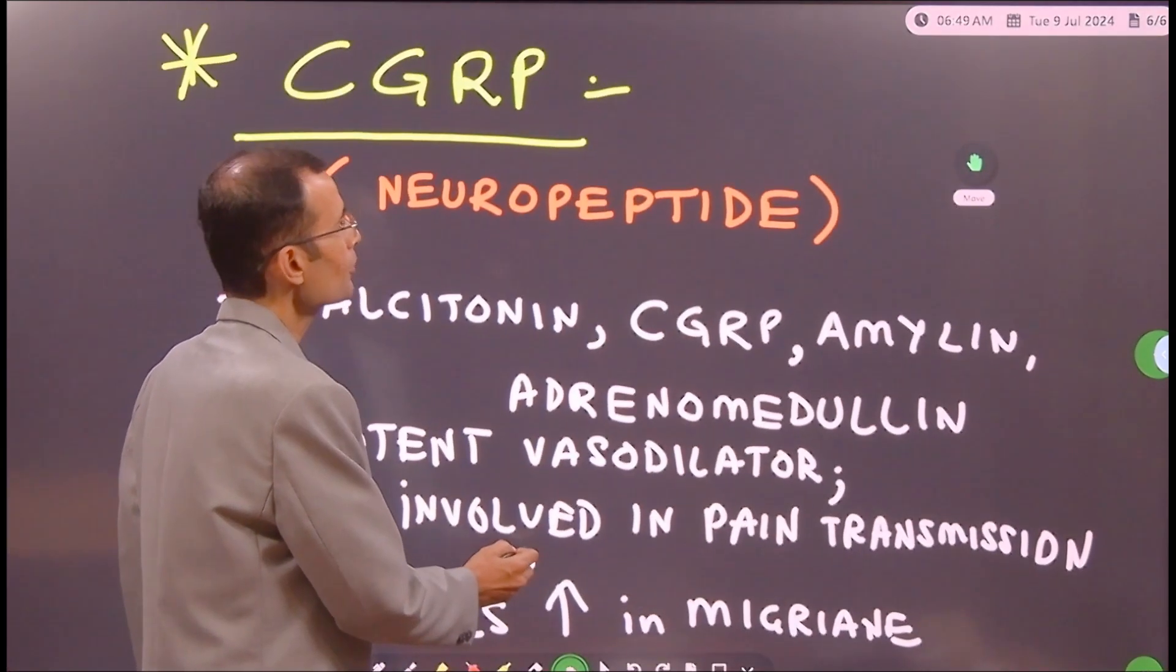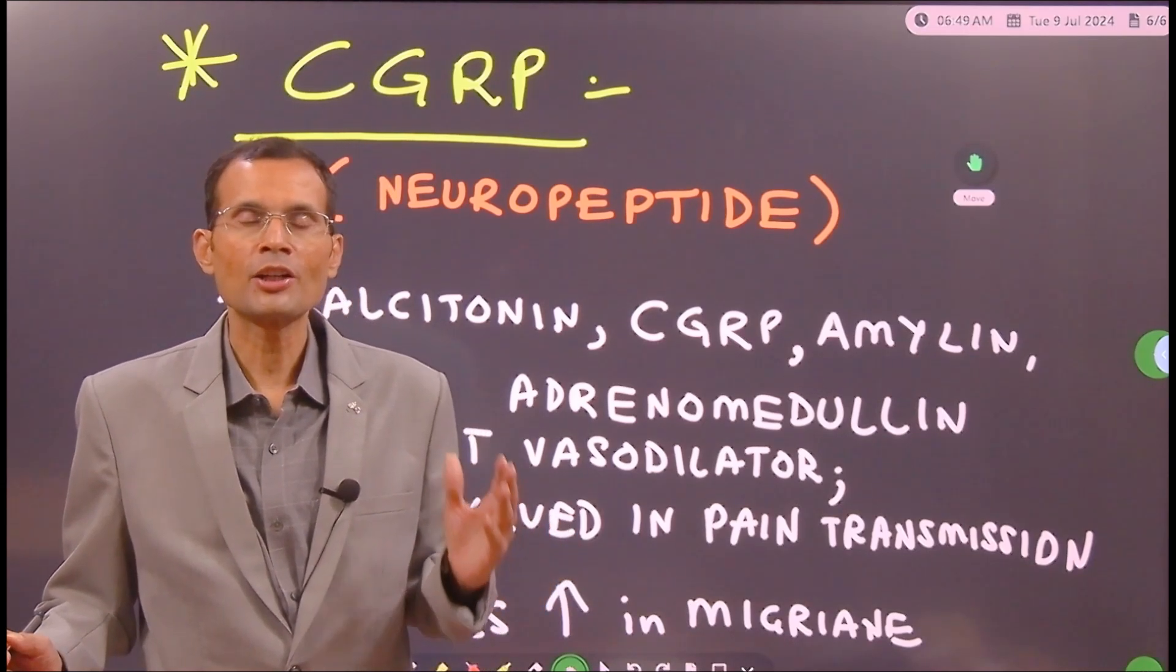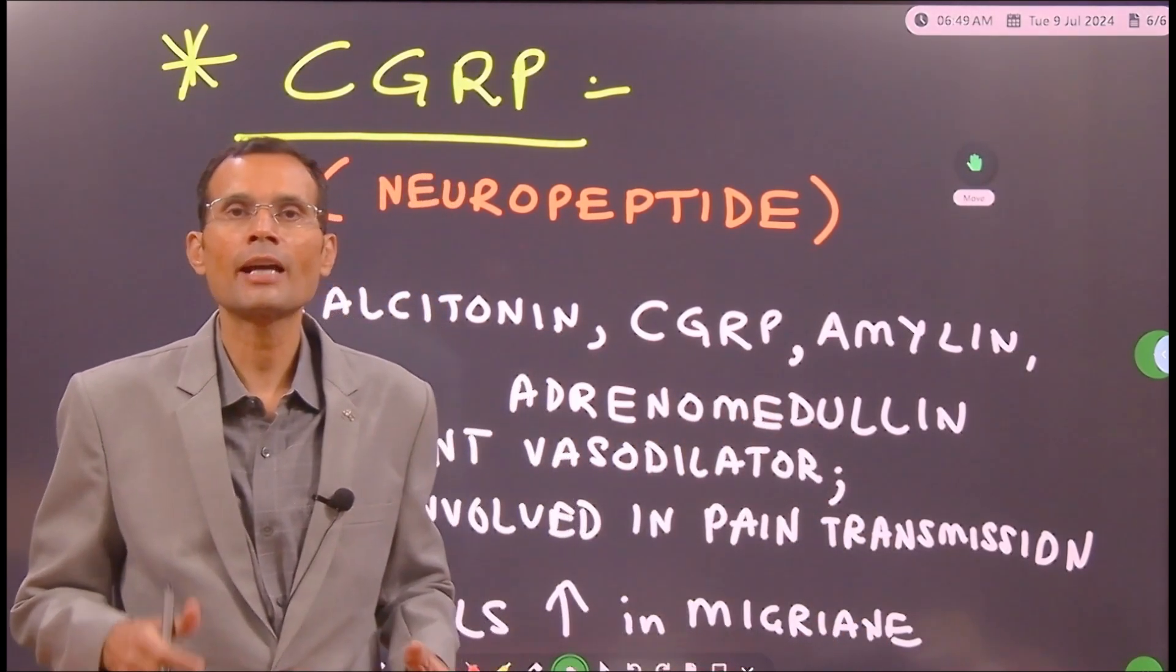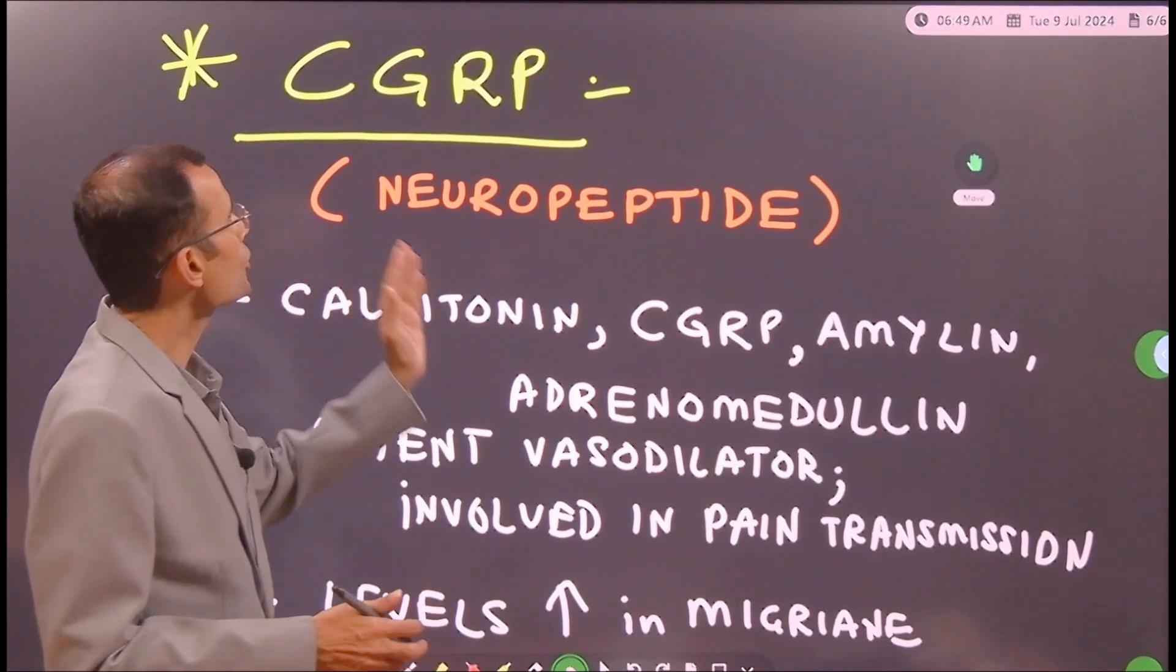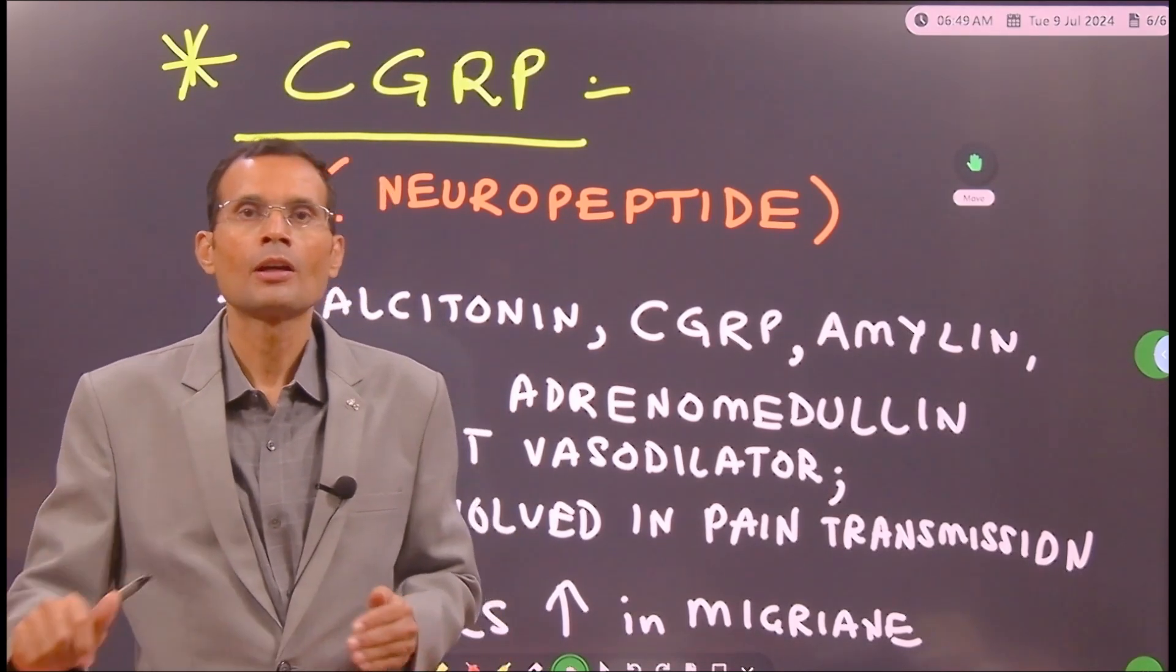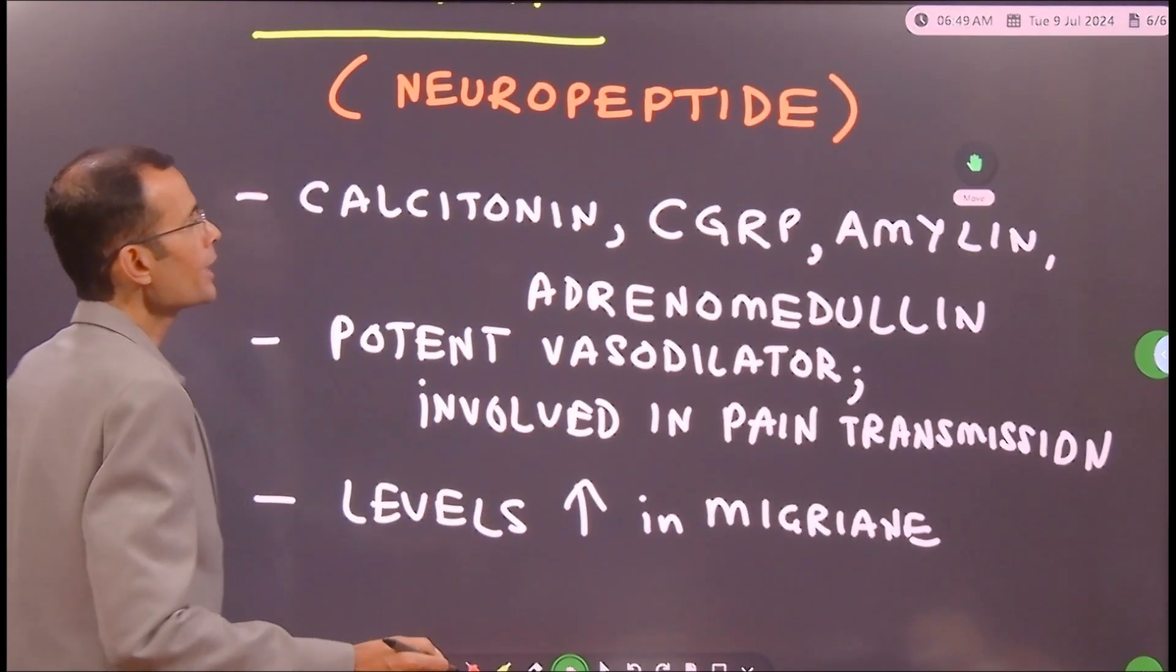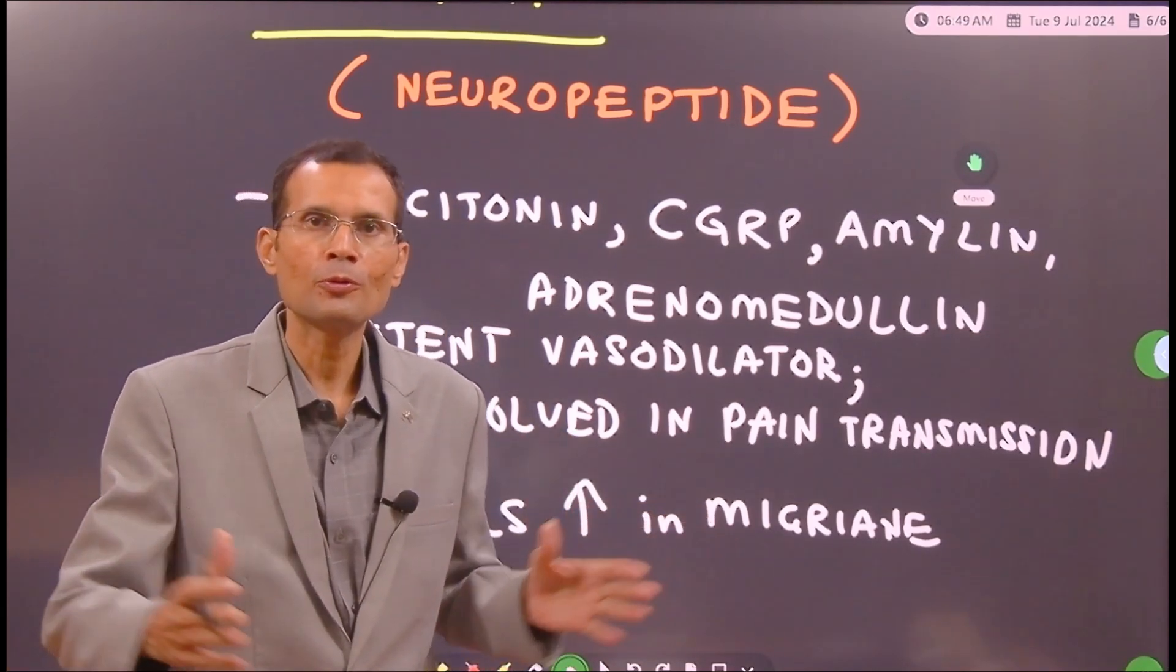Finally, the discussion will be incomplete if we do not talk about another similar kind of peptide - it is called not similar but the namesake, that is calcitonin gene related peptide. Since we talked about calcitonin, I thought I will also include CGRP in this particular video. Calcitonin gene related peptide - it is a neuropeptide. So the difference is calcitonin is a hormone, CGRP is a neuropeptide. It is going to be released by nerve endings, neurons.